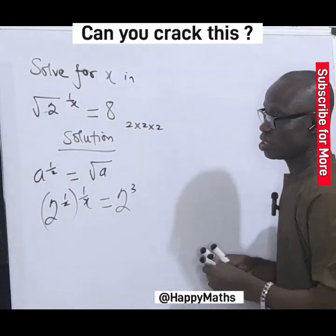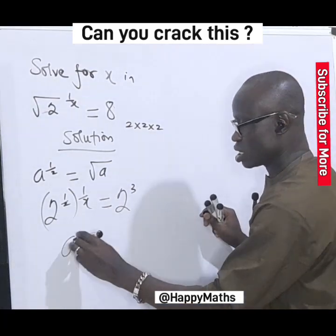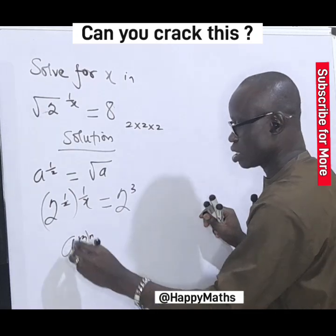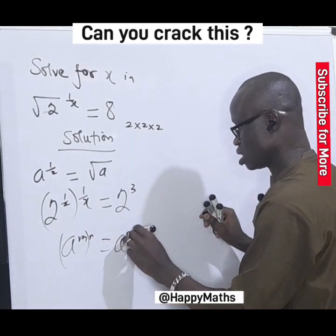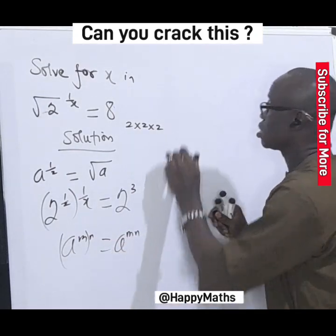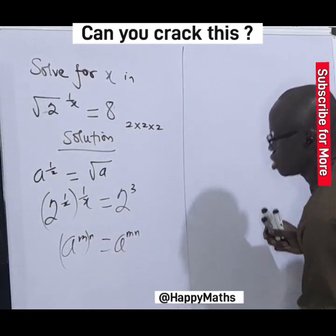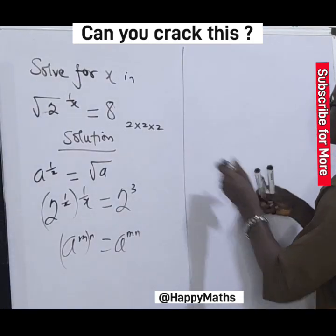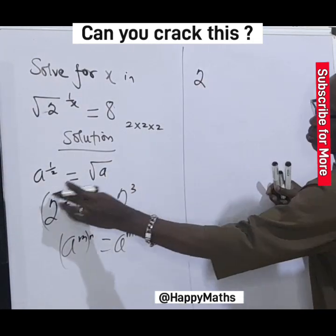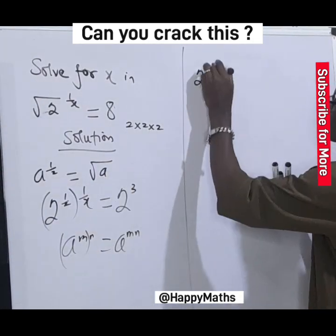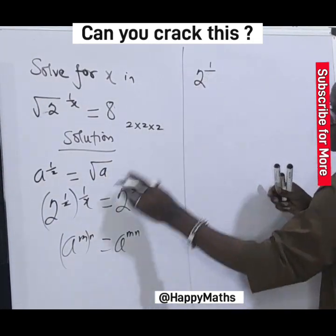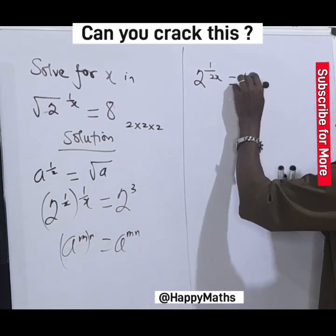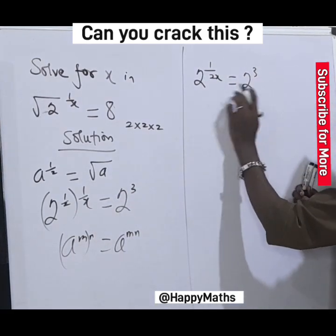Recall that a to the power of n, raised to another power n, is the same thing as a to the power of n times n. Applying that here, we get 2 raised to the power of 1 times 1 over 2s, equal to 2 raised to the power of 3.